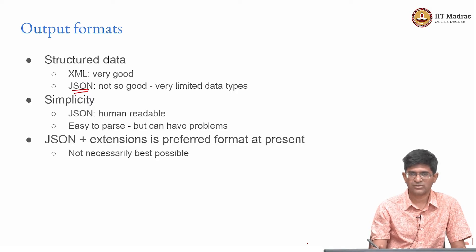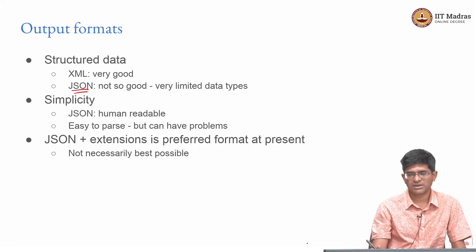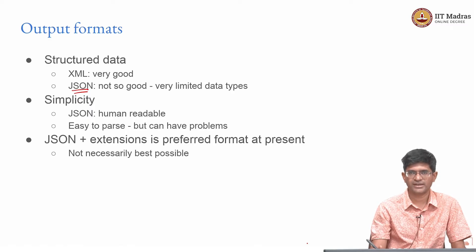I am stating 'at present' for a specific reason: these are the best practices and conventions that exist today. A few years ago they were not considered best practices — XML was considered superior because it could handle structured data, but the simplicity of JSON won out over time. It is entirely possible that some other language or representation format will become more popular later on. As far as possible in today's environments, it is preferable to use currently popular formats because they are easy and people will be expecting certain kinds of behavior from them.